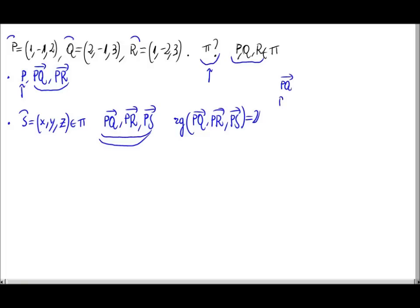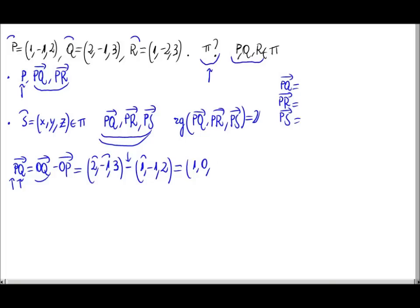Let's calculate these vectors. PQ, PR and PS. Let's do it down here. So, PQ would be OQ, the origin Q, minus OP, the origin P. So this is (2, -1, 3) minus OP (1, -1, 2). We would have 2 minus 1 is 1, minus 1 minus minus 1 is 0, 3 minus 2 is 1. So here we have it: (1, 0, 1).